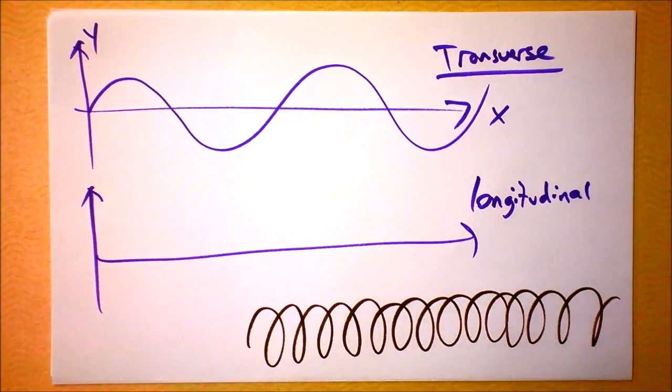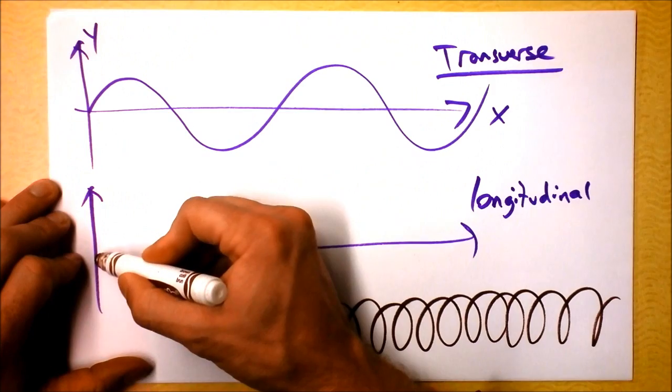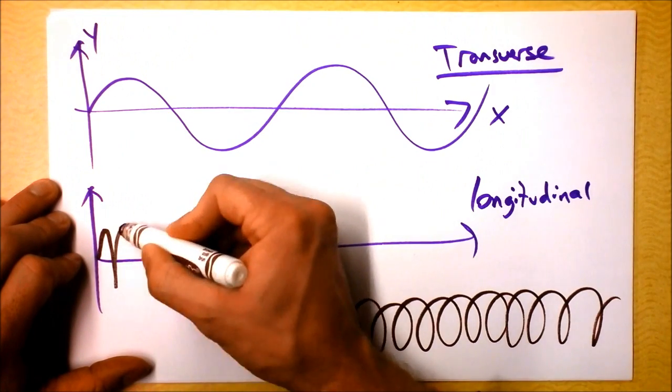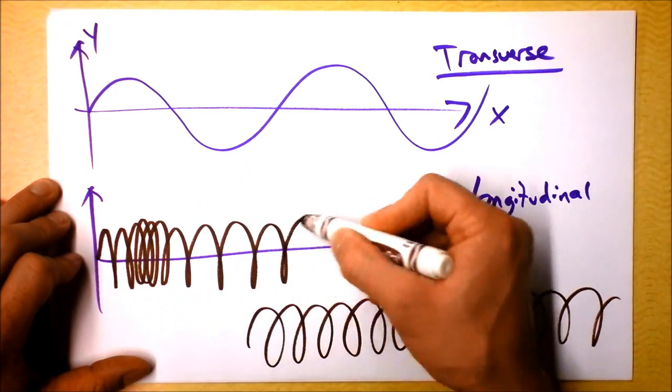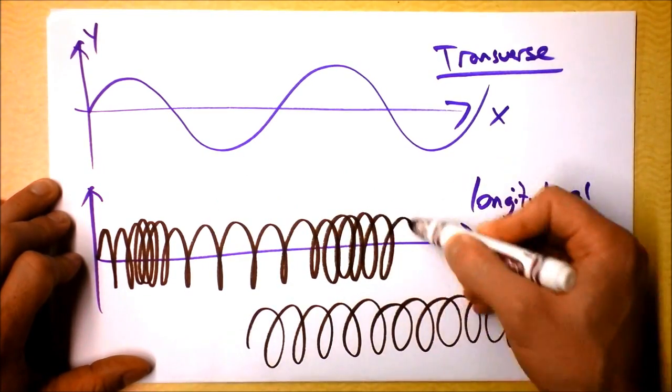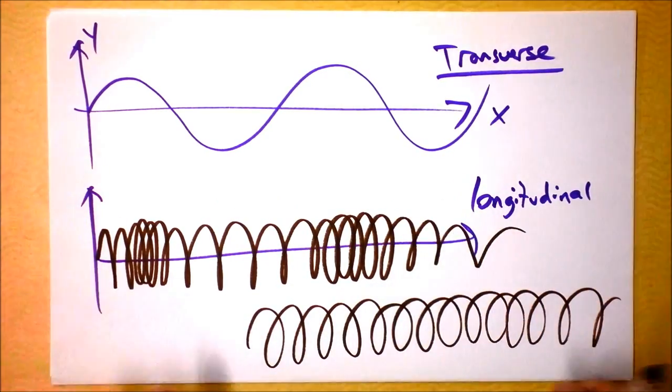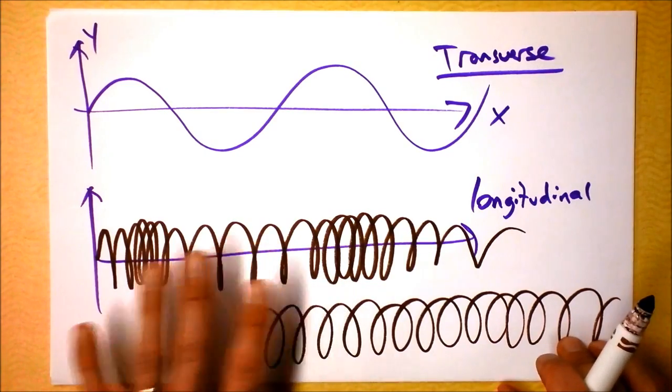And we can see a longitudinal wave like this. I'm going to try to draw it getting denser and then spreading out and then getting denser and then spreading out. Now, that's a longitudinal wave photograph.